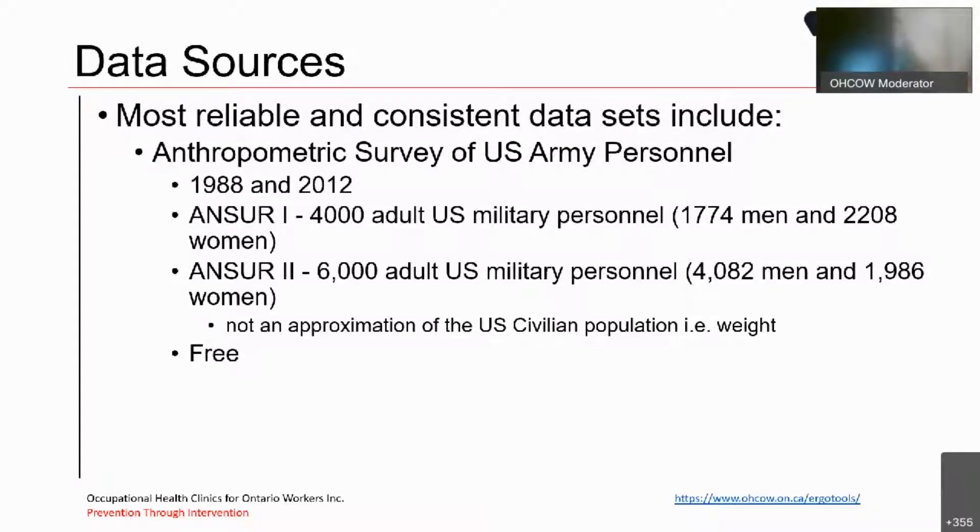So for the data sources that we used to create the anthropometric tables, we found the most reliable and consistent data sets were the anthropometric survey of U.S. Army personnel conducted in 1988 and 2012, known as ANSUR-1, which had 4,000 military personnel, 1,774 men, 2,208 women. The ANSUR-2, which had 6,000 military personnel, 4,082 men, 1,986 women. And, of course, it's important to note that it's not an approximation for the standard civilian population. These are based on military personnel. And this information is available free at no charge.